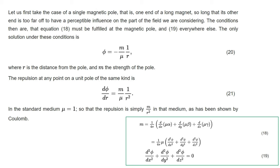Let us first take the case of a single magnetic pole, that is, one end of a long magnet so long that its other end is too far off to have a perceptible influence on the part of the field we are considering. The conditions then are that equation 18 must be fulfilled at the magnetic pole and equation 19 everywhere else. The only solution under these conditions is φ = −m/μ · 1/r, where r is the distance from the pole and m is the strength of the pole. The repulsion of any point on a unit pole of the same kind is dφ/dr = m/μ · 1/r². In the standard medium, μ = 1, so that the repulsion is simply m/r² in that medium, as has been shown by Coulomb.